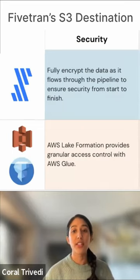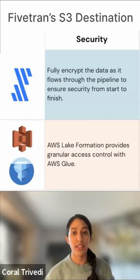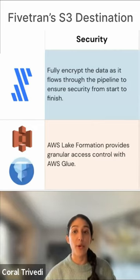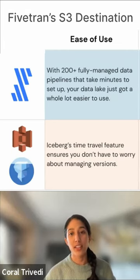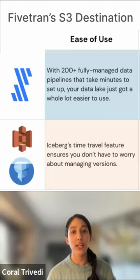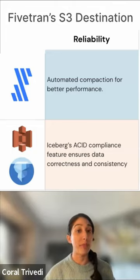Fundamentally with AWS Glue, security is a really big feature I wanted to highlight. There's granular access control through AWS Glue at both the column level and the row level. And so using Fivetran, AWS S3, and Apache Iceberg, you'll see that this changes the way you might be managing your data lake or your lake house.